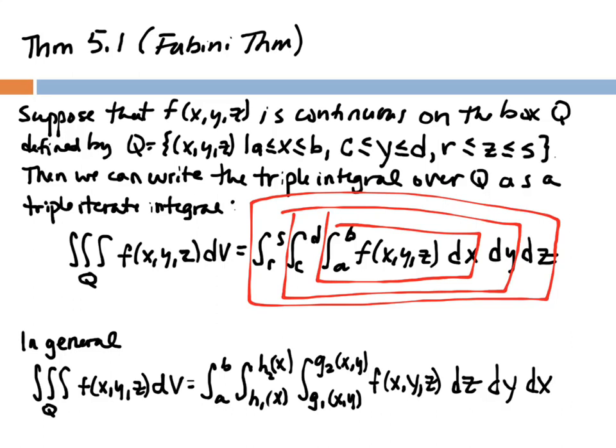We suppose that f(x, y, z) is continuous on the box Q, defined as the set of points where x is between a and b, y is between c and d, and z is between r and s. We can then write the triple integral over Q as the integral from r to s, from c to d, and from a to b of f(x, y, z) dx dy dz. The red boxes everywhere emphasize that we need to be careful matching limits of integration to the correct variable — it works inside-out, like parentheses.